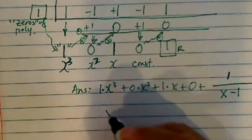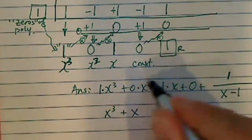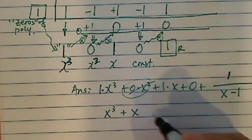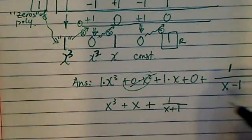x cubed plus x. Okay, so this term is 0 plus x, plus 1 over x plus 1. Okay, so that's our answer.